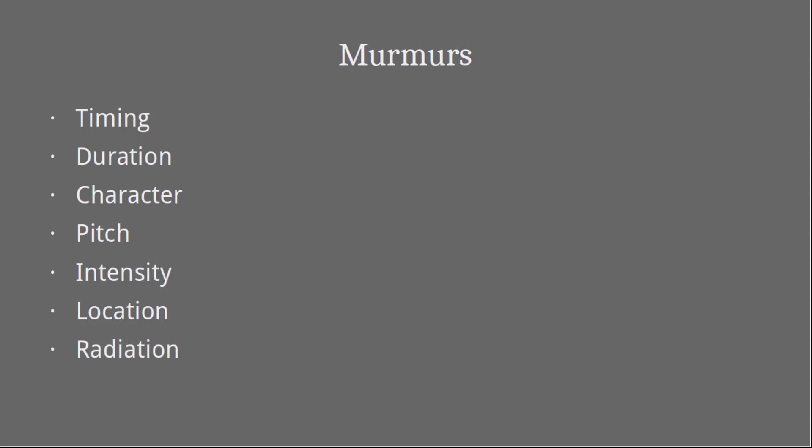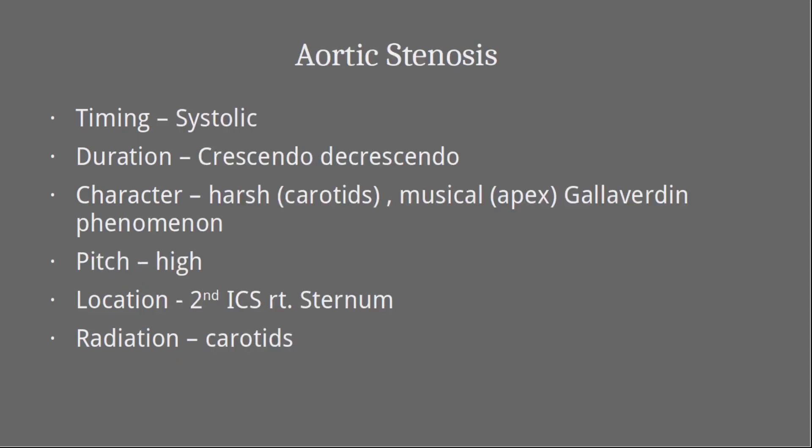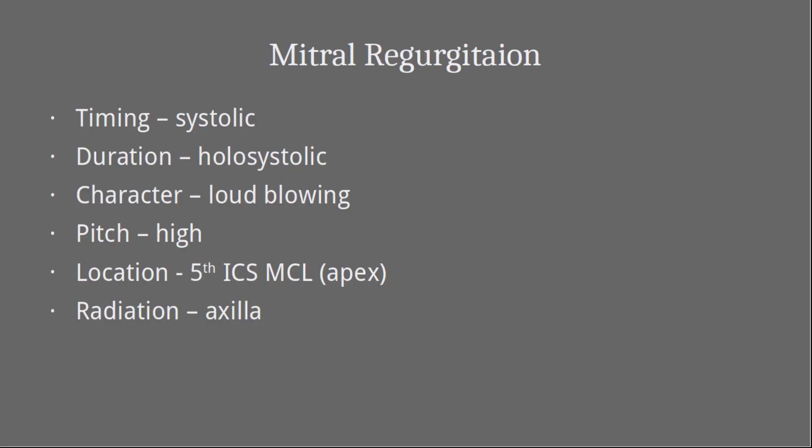Regarding pitch, all murmurs are high-pitched except the mitral stenosis murmur, which is low-pitched. All high-pitched murmurs are heard with the diaphragm of the stethoscope, and low-pitched murmurs are heard with the bell. The aortic stenosis murmur is systolic, occurring throughout systole, and is a crescendo-decrescendo murmur. Its character is harsh and musical: the harsh character is heard best at the carotids and the musical component at the cardiac apex. This dissociation of harsh and musical sounds is known as the Gallavardin phenomenon. Its pitch is high, located at the second intercostal space to the right of the sternum, and it can radiate to the carotids.